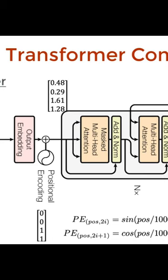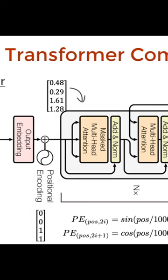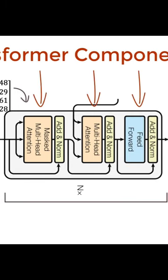We pass this vector, finally, into a decoder block that has three main components, two of which are similar to the encoder block.